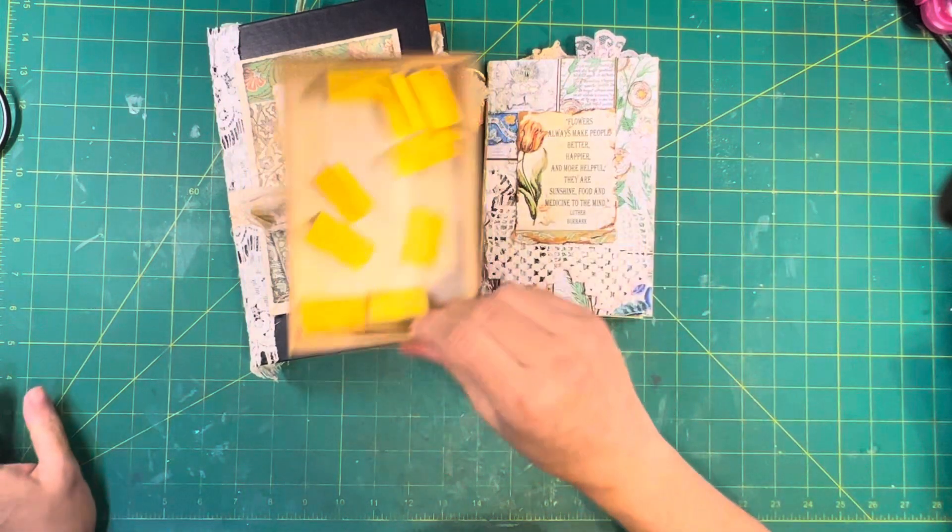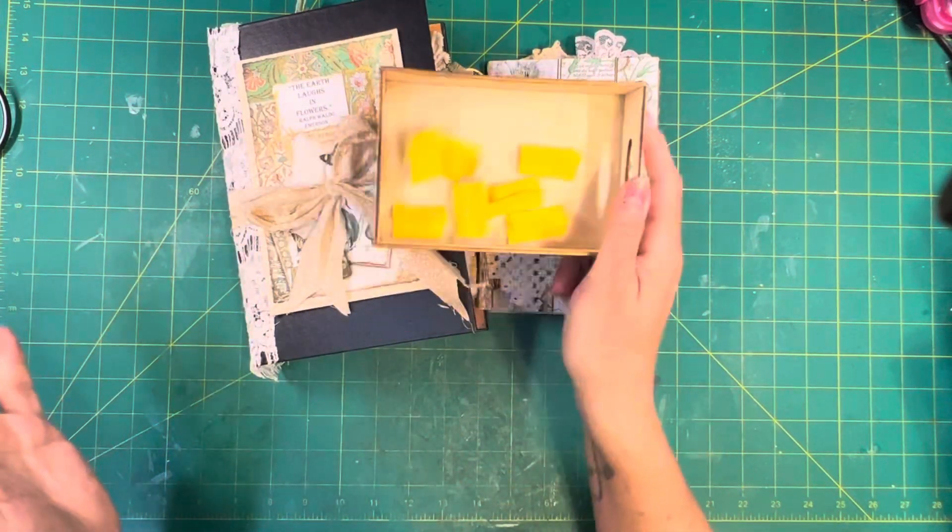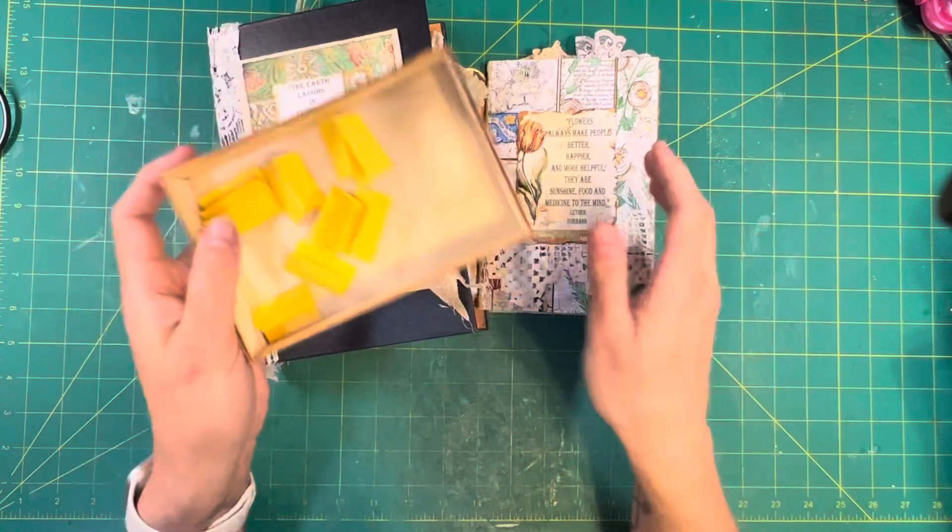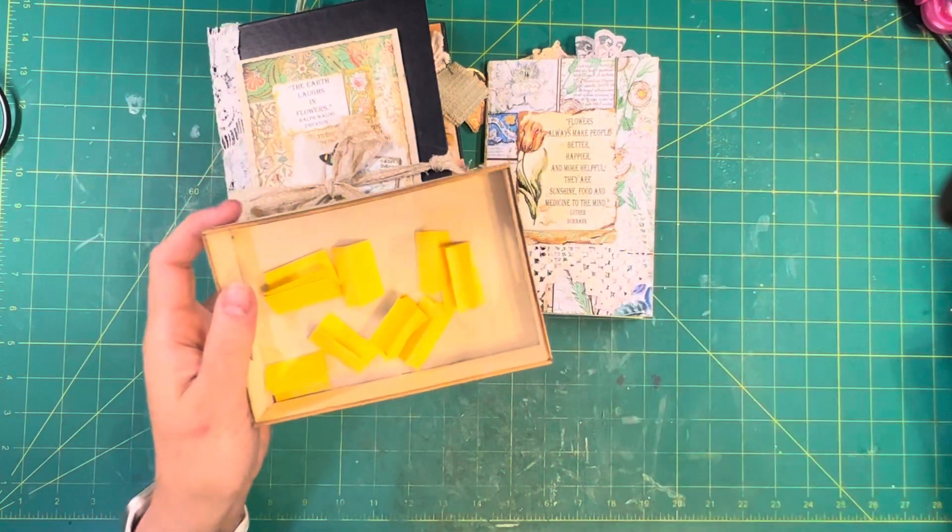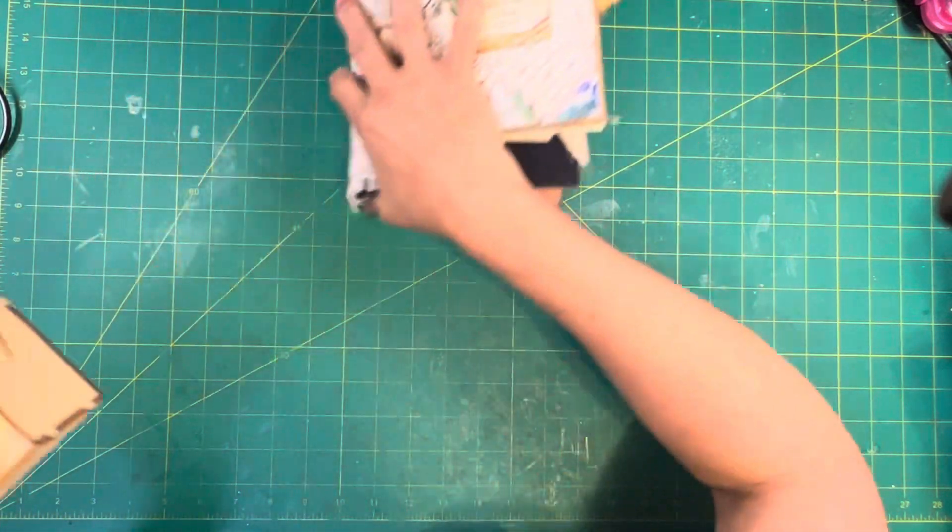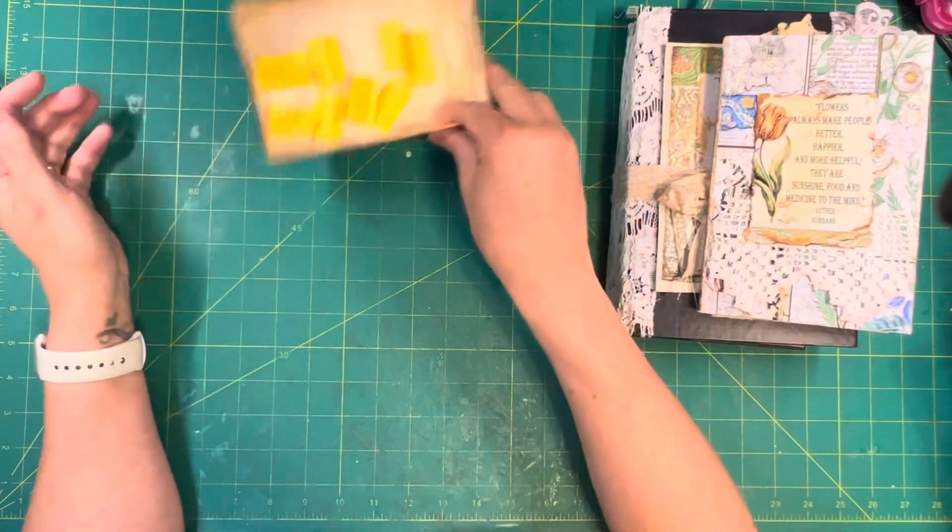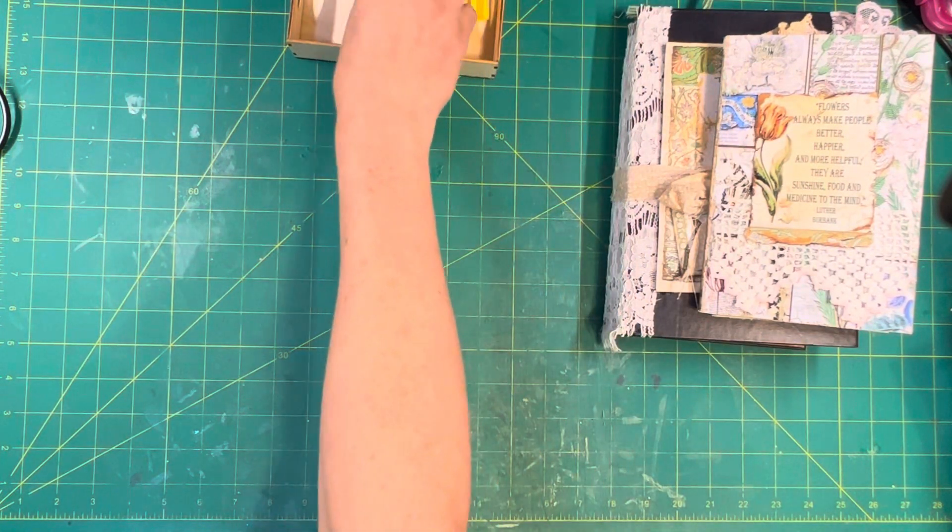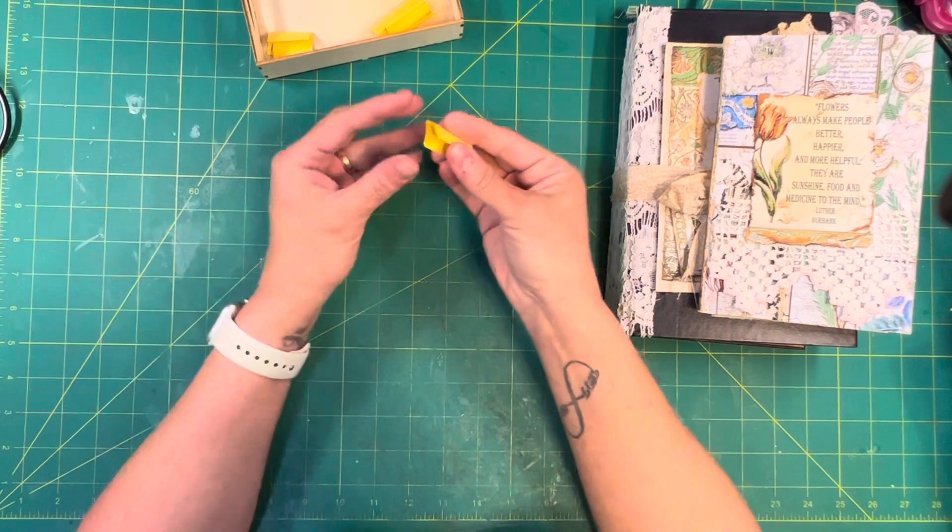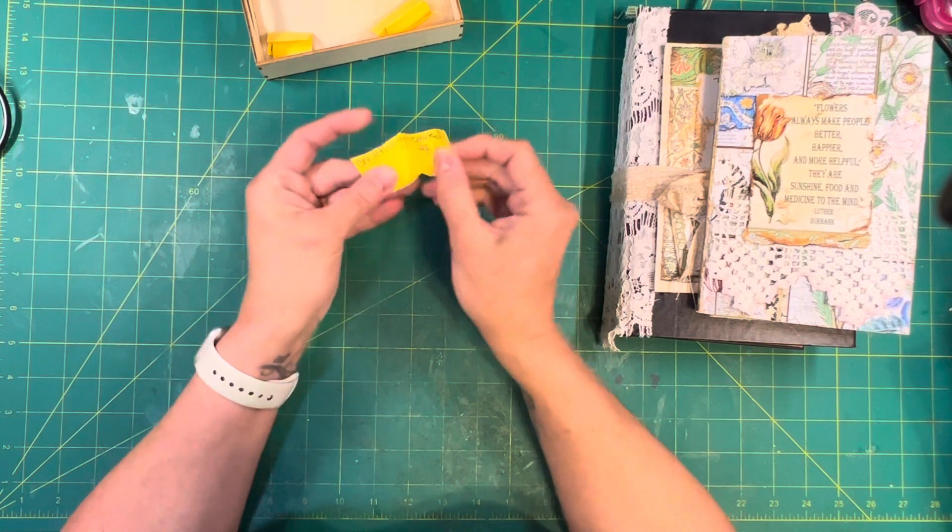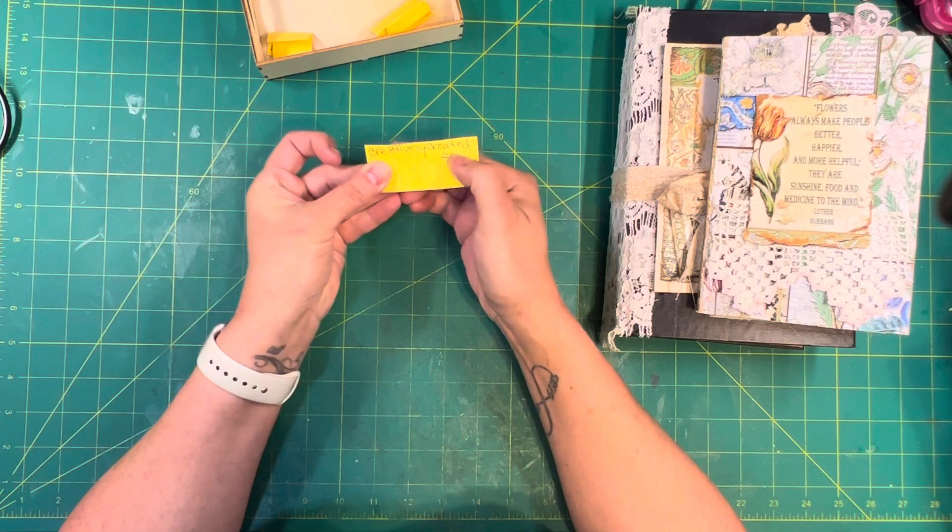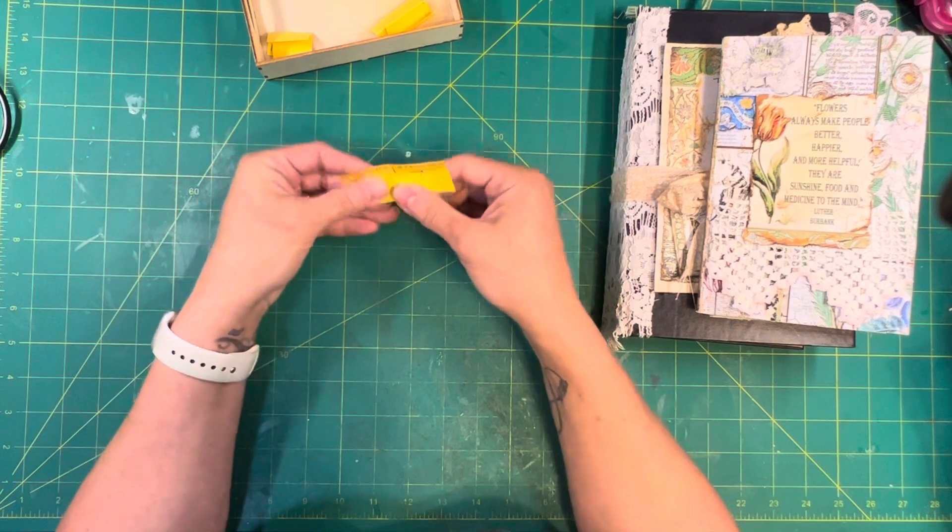I have everybody's names folded up in these little papers in this little box. I'm just going to close my eyes and pull. Okay, so this is creatively created 26.